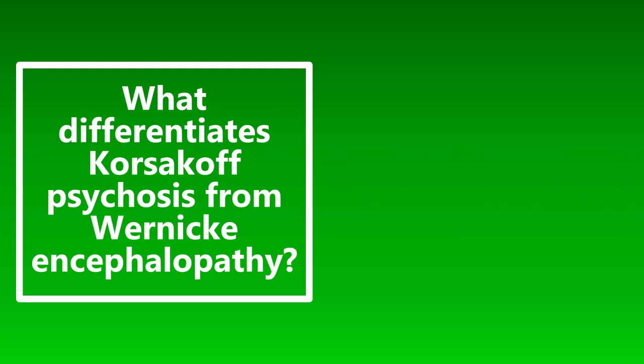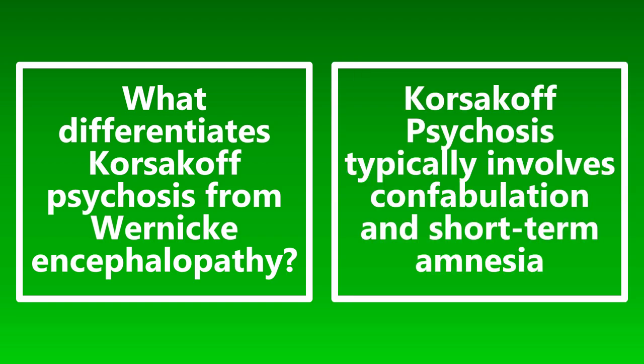What differentiates Korsakoff psychosis from Wernicke encephalopathy? The differentiating factor is that Korsakoff psychosis typically involves confabulation and short-term amnesia. A patient with Korsakoff psychosis may not remember speaking to you five minutes ago, or may make up a confabulation when asked about recent events. Wernicke encephalopathy presents more with altered mental status and ataxia.